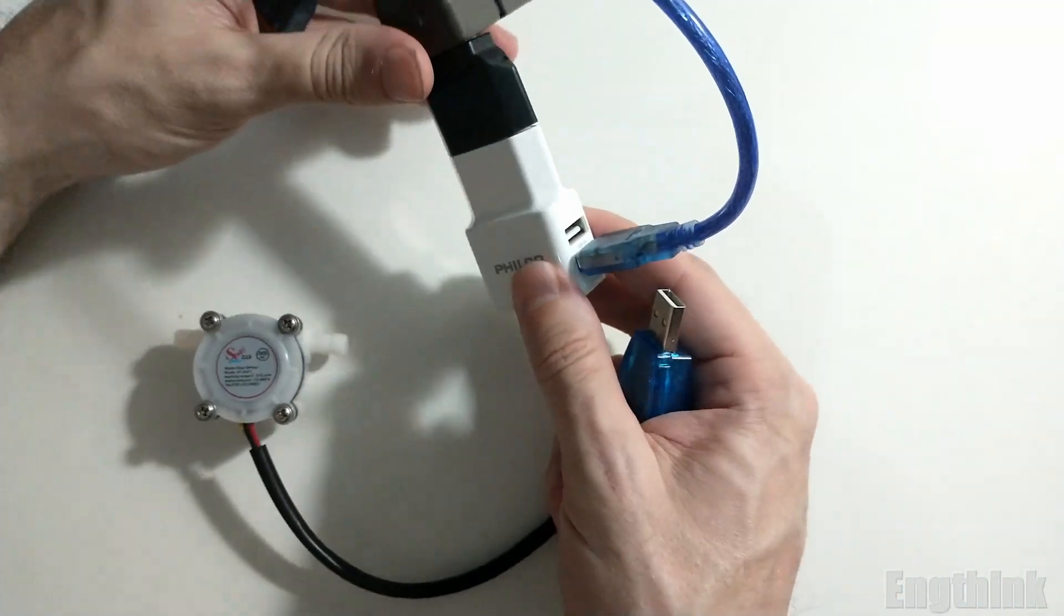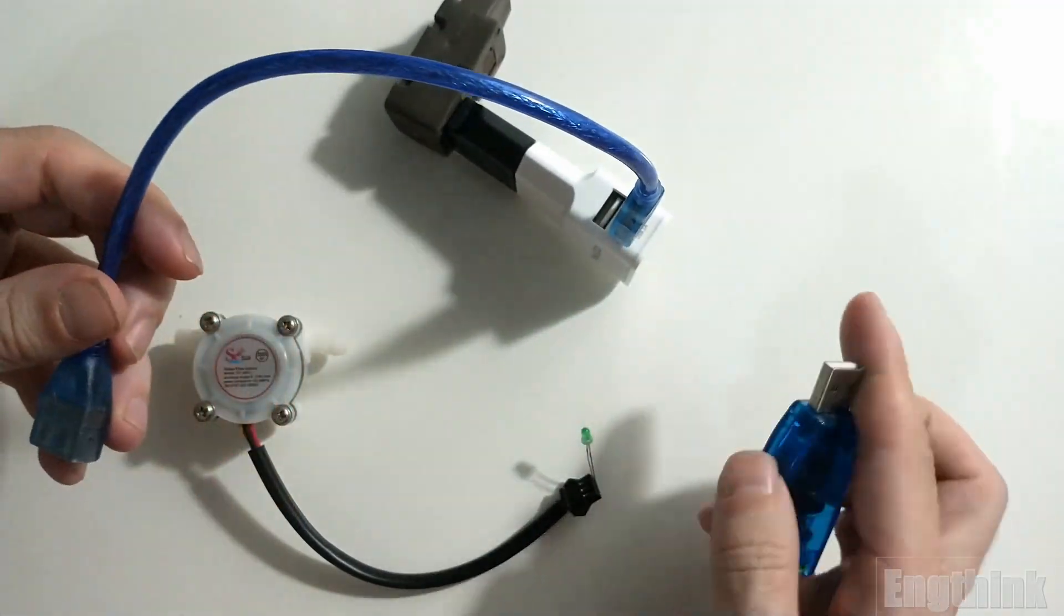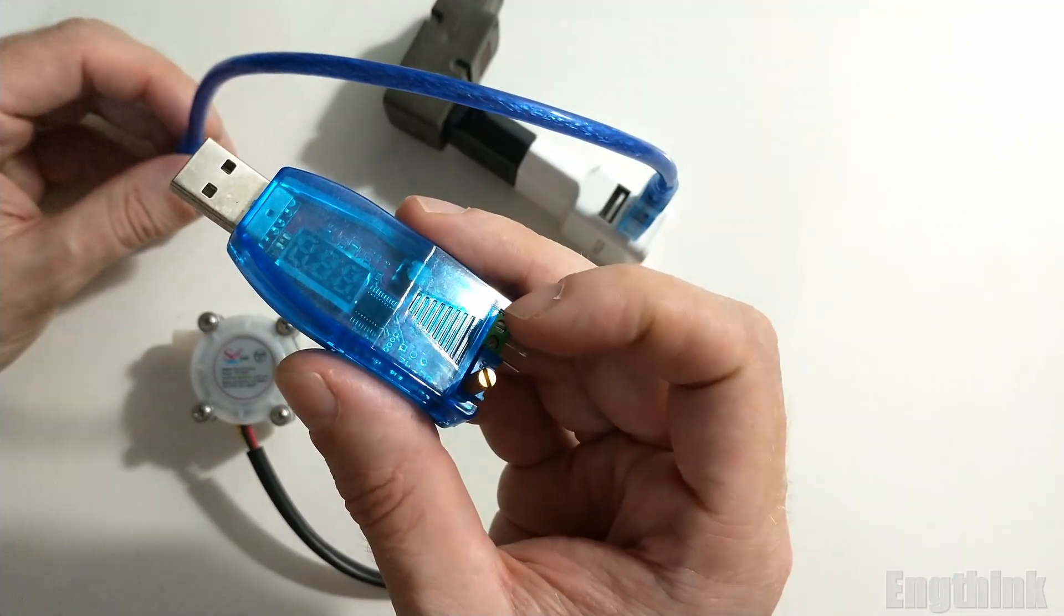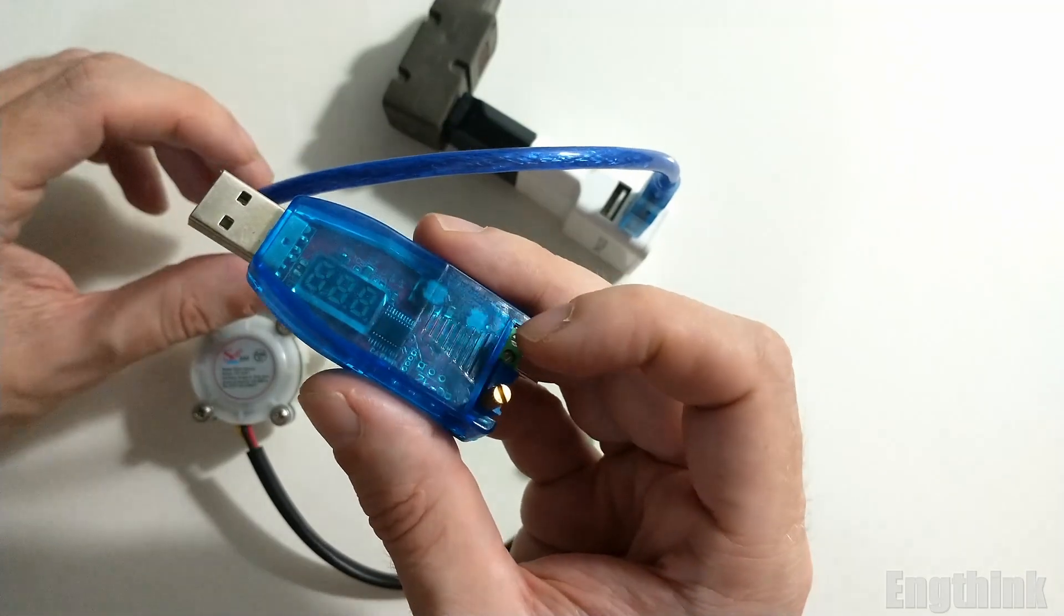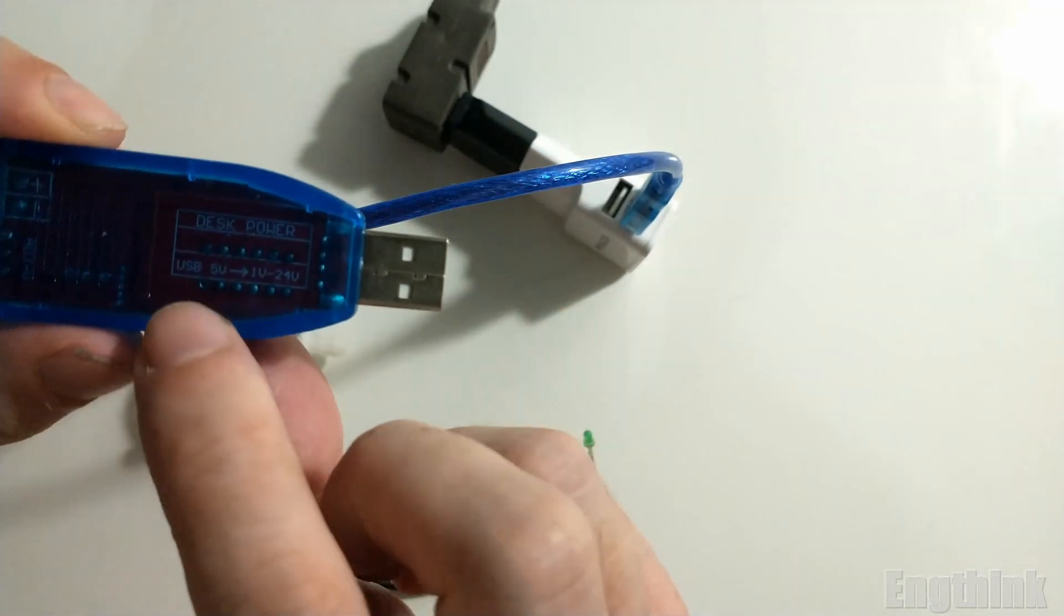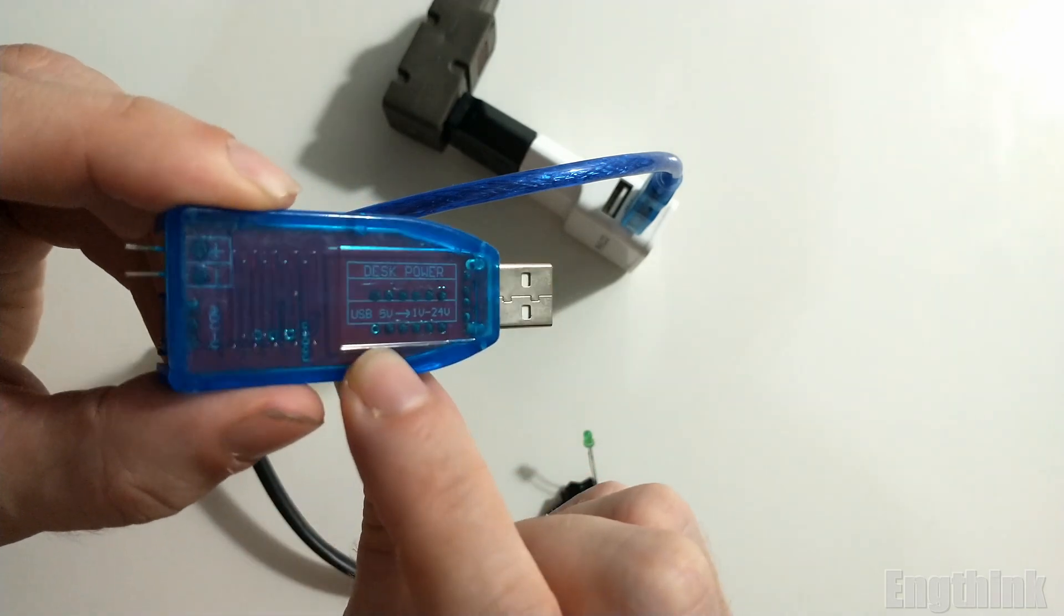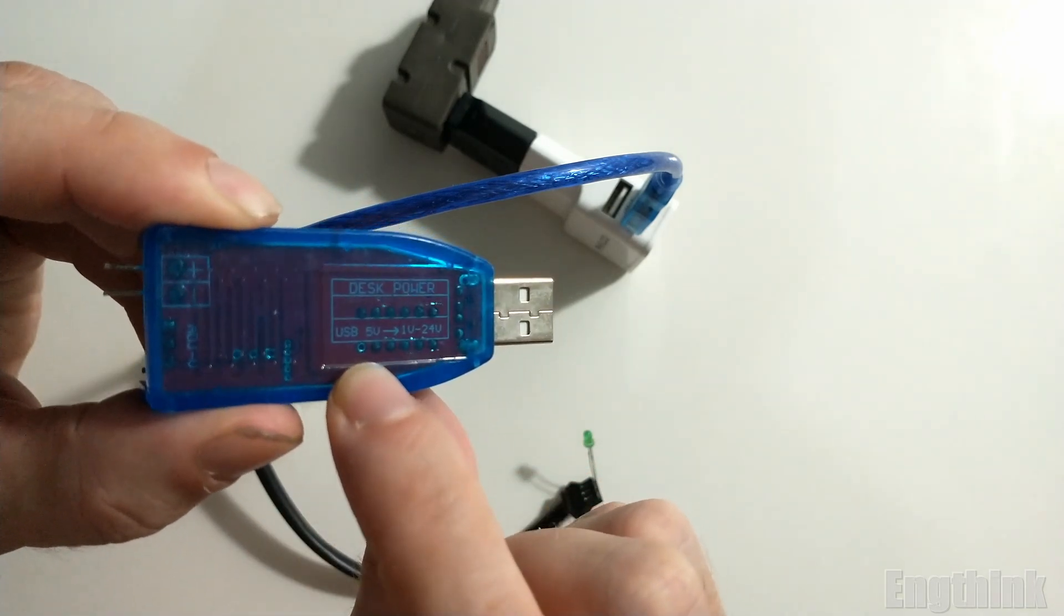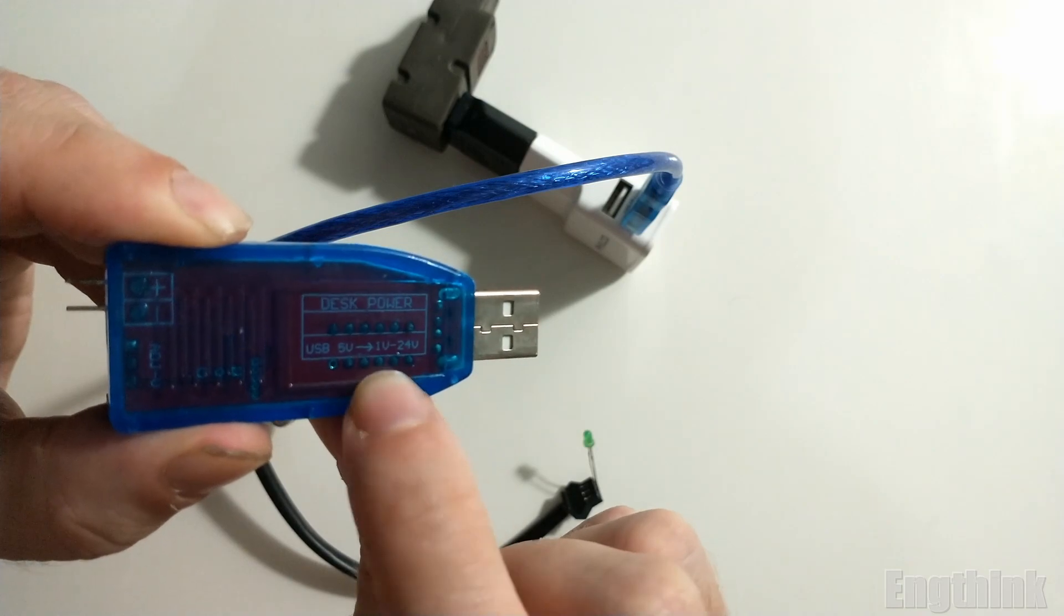On the back of the DC/DC converter, we can see that the input will be 5 volts DC, and it will be possible to adjust the output between 1 and 24 DC volts.